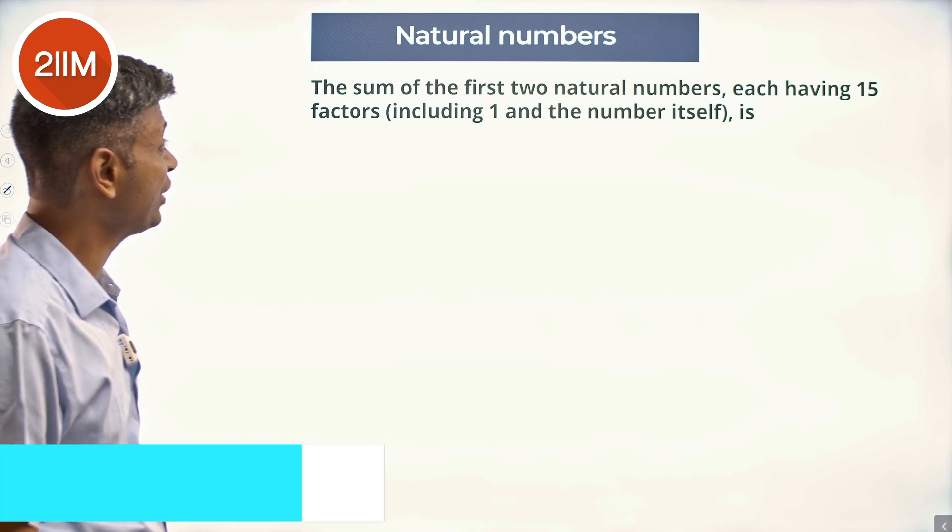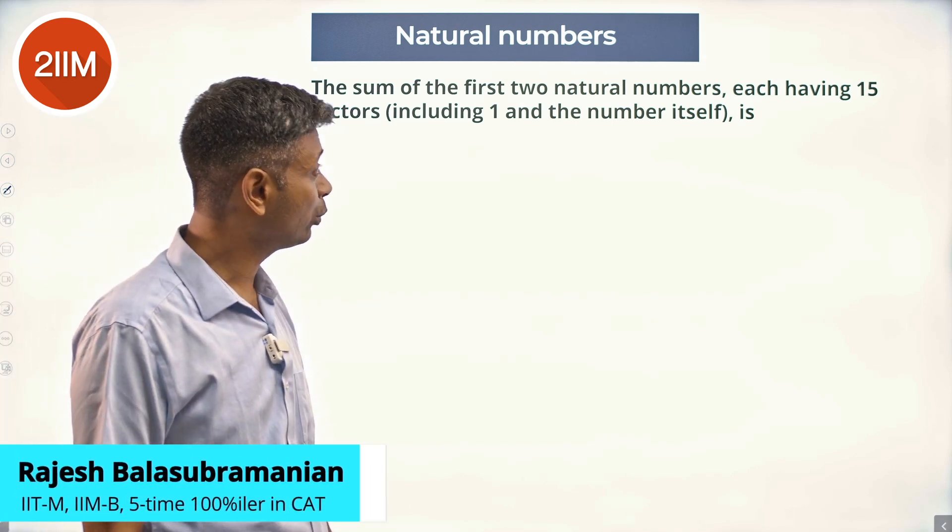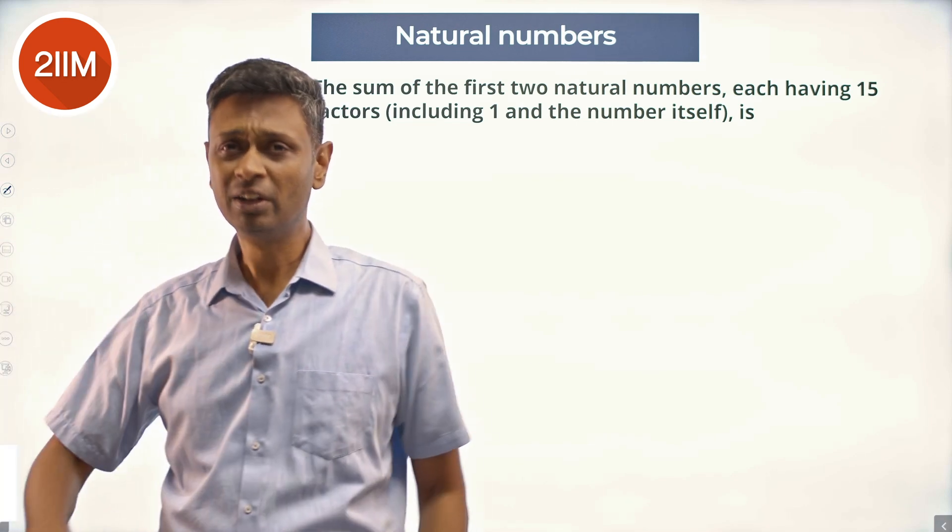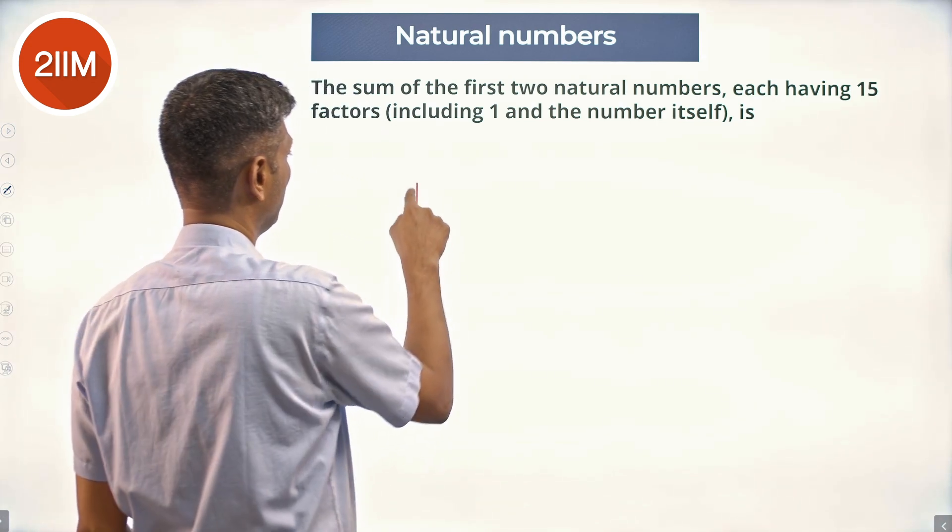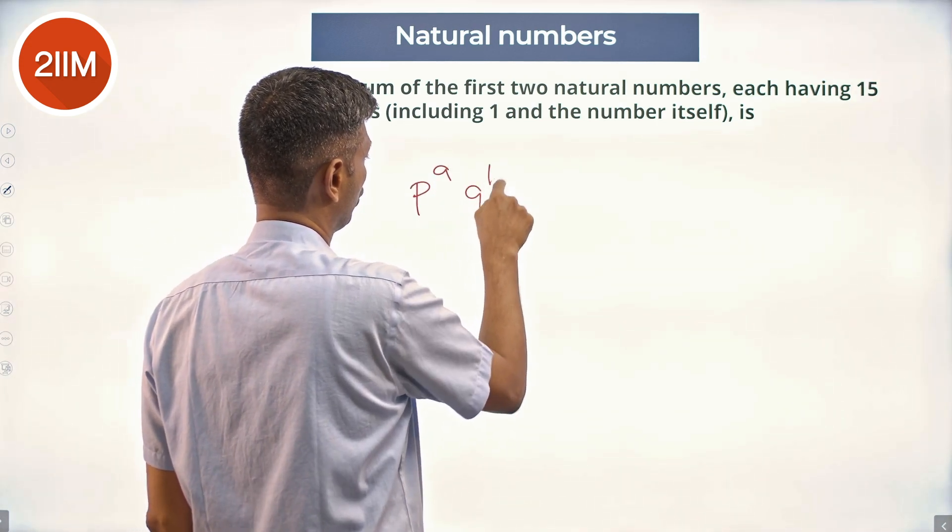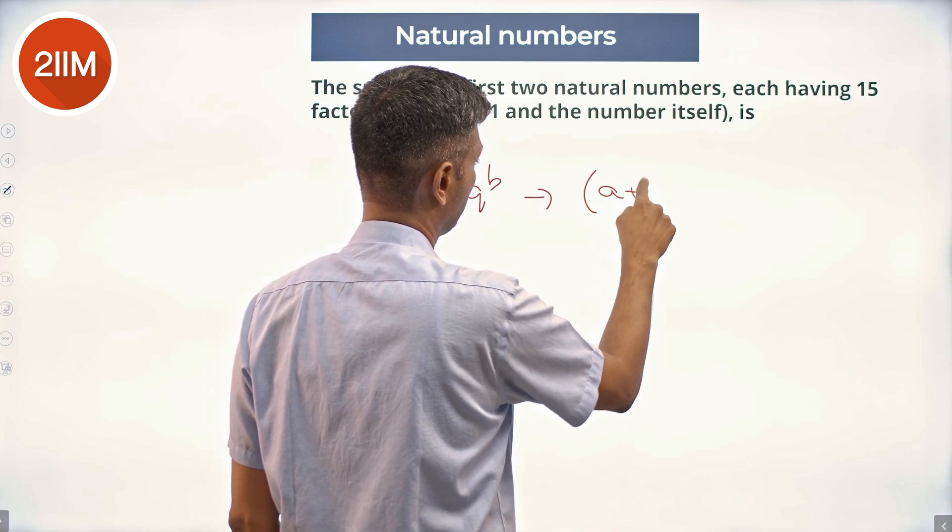Find the first two natural numbers each having 15 factors including one and the number itself. A number of the form p power a into q power b has a plus 1 into b plus 1 factors.